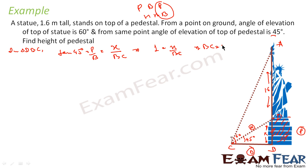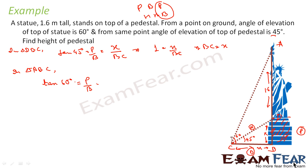Tan 45° = P/B, where P is X and B is BC. Since tan 45° = 1, we get BC = X. So the base of the smaller triangle is also X. Now we take the bigger triangle ABC and use tan 60°. Tan 60° = P/B, where P is the full height AB, which is 1.6 + X, and the base is BC = X. Tan 60° equals root 3.